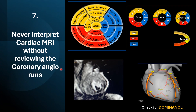Whenever interpreting cardiac MRI, review the coronary angiography images. In our patient, areas of mid inferior and basal inferior segments showed perfusion defects. Traditionally we might interpret this as RCA territory, but the coronary images showed the RCA was hypoplastic and not supplying the PDA — it was the LCX supplying the mid inferior and basal inferior segments. Don't blindly write this as RCA territory; check for dominance and review coronary images before submitting your report.